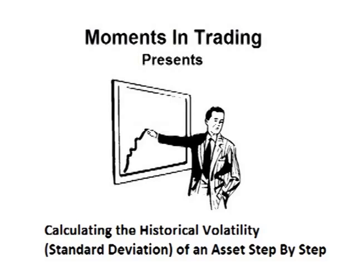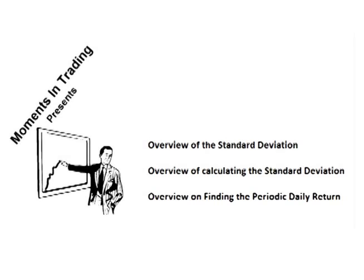Hello and welcome. In this video, I will show how to find the historical volatility of an asset, also known as the standard deviation of the periodic daily returns, step by step. If you have not already done so, you may want to watch my last two videos on an overview of the standard deviation, an overview of calculating the standard deviation, and an overview of the periodic daily returns of an asset.